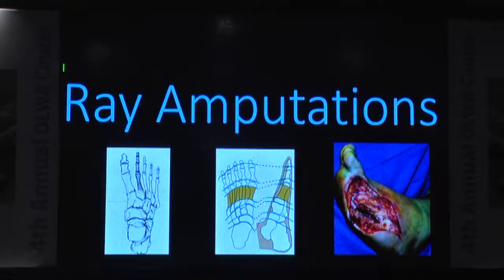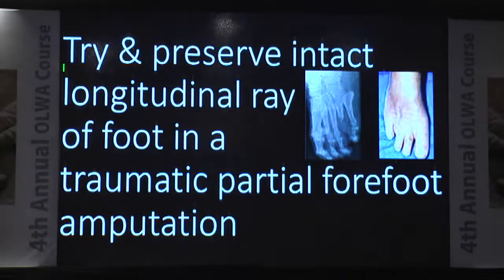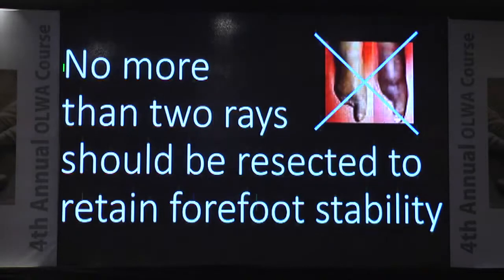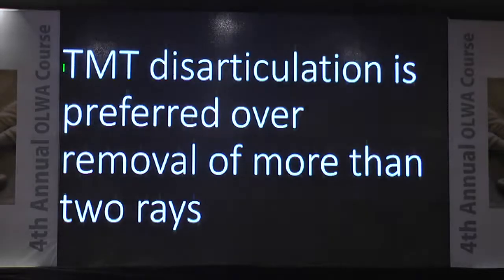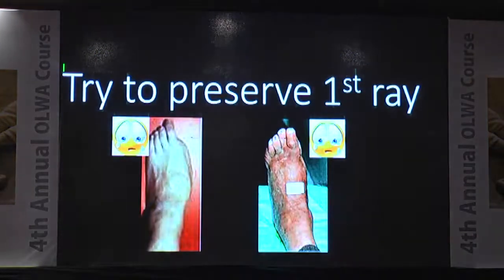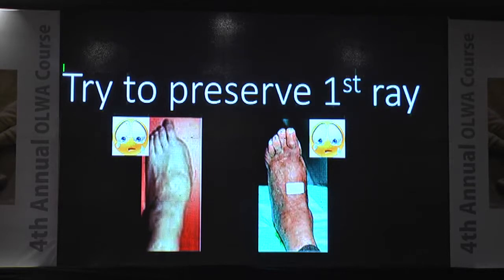For ray amputations, try to preserve an intact longitudinal ray of the foot in traumatic partial forefoot amputation. Don't go above to the mid-foot or Chopart level. Ray resections are more durable and functional than trans-metatarsal amputation. No more than two rays should be resected to retain stability of the forefoot — TMT disarticulation is preferred over removal of more than two rays. Always try to preserve the first ray; if amputating the first ray, keep at least 1.5 centimeters of the base of the first metatarsal for ligament attachment.